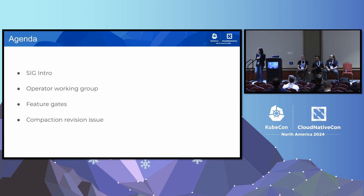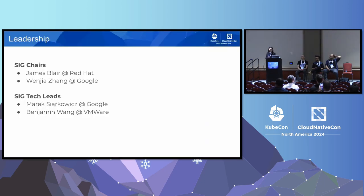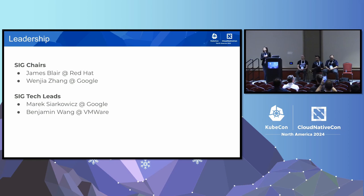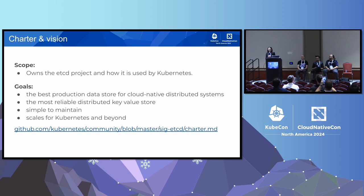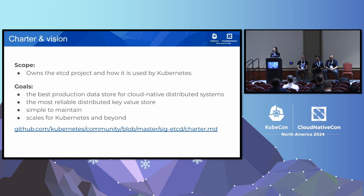Here is a quick agenda of today's topics. We'll start with a quick introduction of the SIG, and then go into some of the project highlights. SIG etcd owns the etcd project and how it is used by Kubernetes. As the storage of Kubernetes, our goal is simple: provide the best production-level data store for cloud-native distributed systems — reliable, simple to maintain, and scalable.